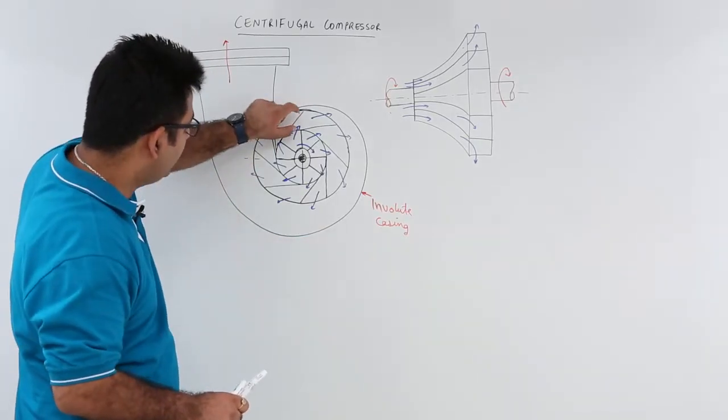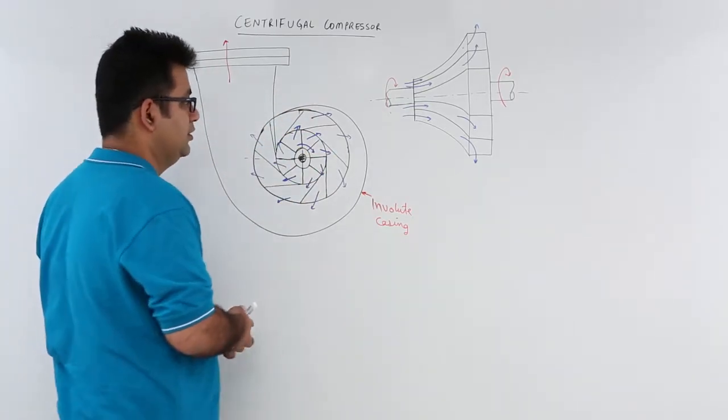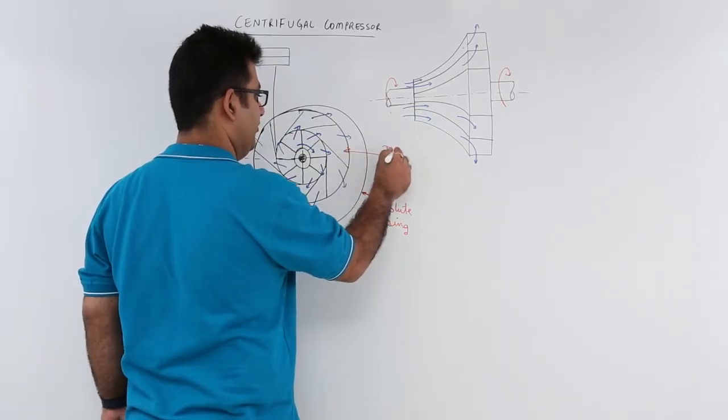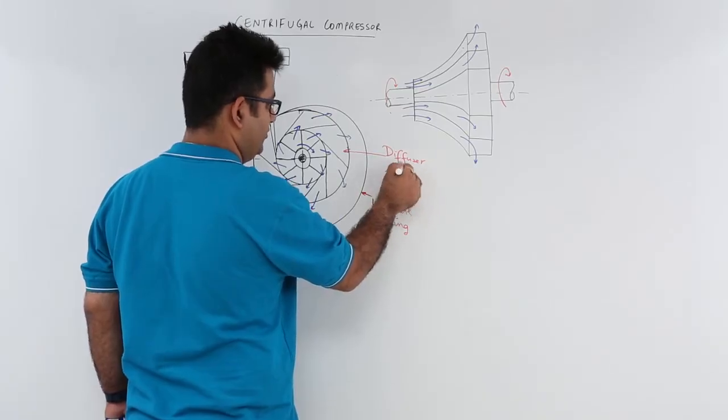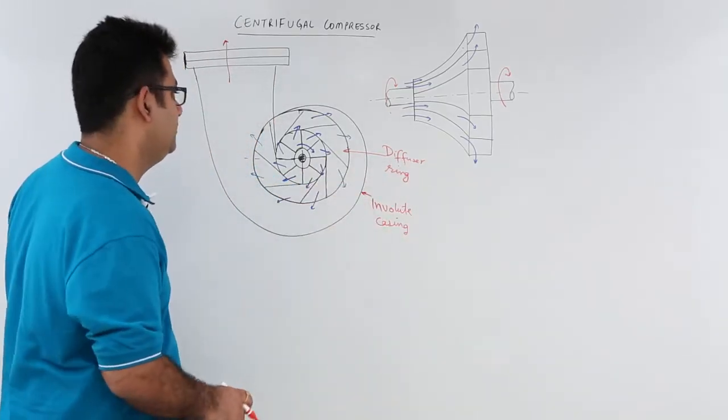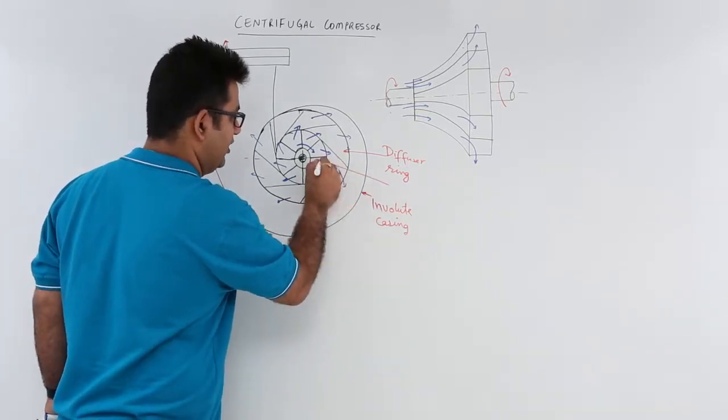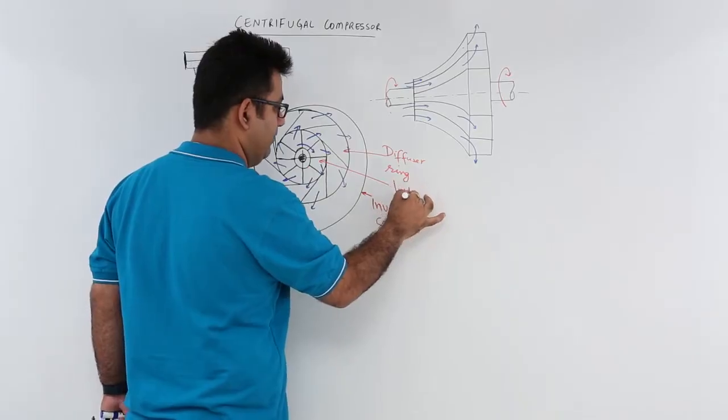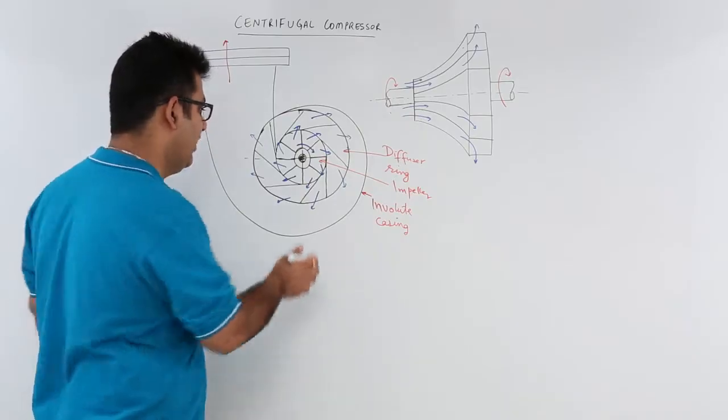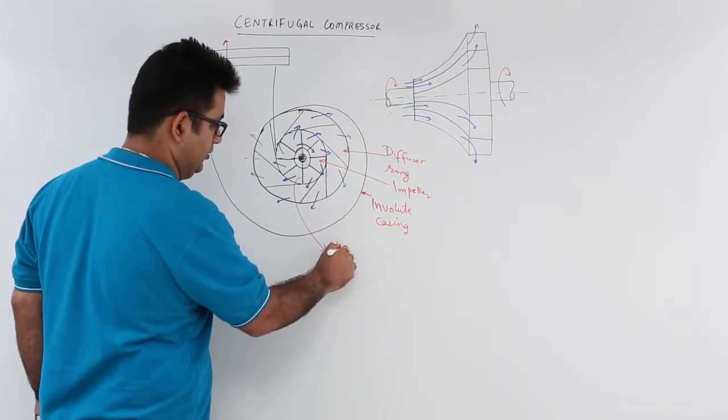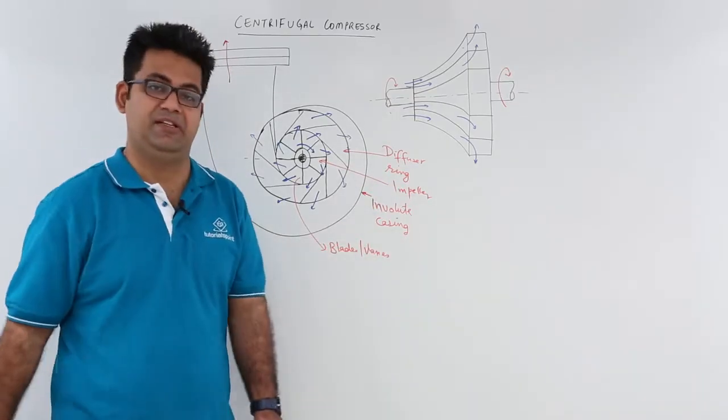So you have seen the involute casing. Now let us have a look at this part. This plate, this part is called the diffuser ring. We will discuss the use of each of these parts in detail one by one. So after diffuser rings, you have this impeller, which is the inner ring. And on impellers, you have these blades or they are also called vanes.